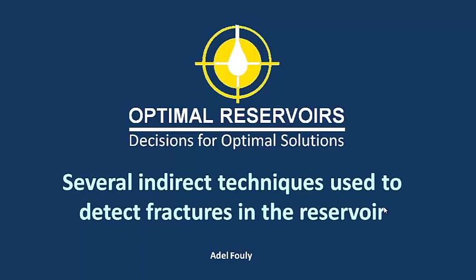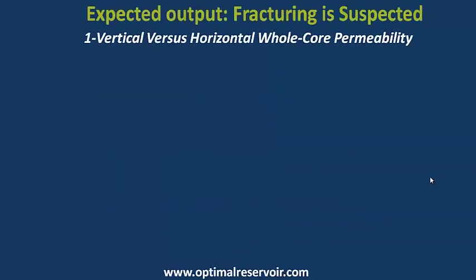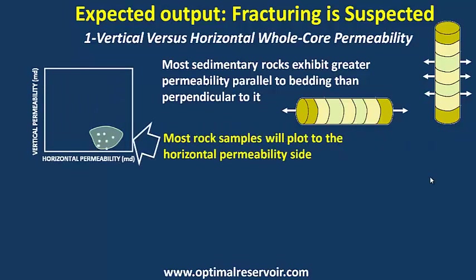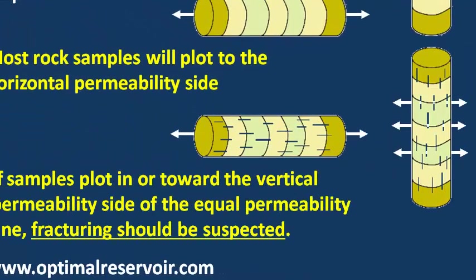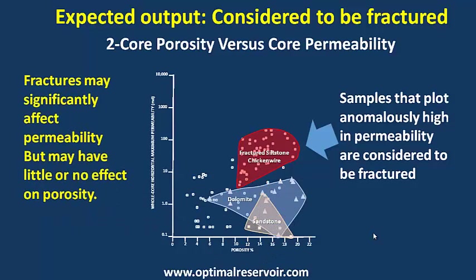Let's talk about several indirect techniques used to detect fractures in the reservoir. The first technique is vertical versus horizontal whole core permeability. Most elementary rocks exhibit greater permeability parallel to bedding than perpendicular to it. Most samples will plot to the horizontal permeability side. If samples plot in or toward the vertical permeability side of the equal permeability line, fracturing should be suspected.